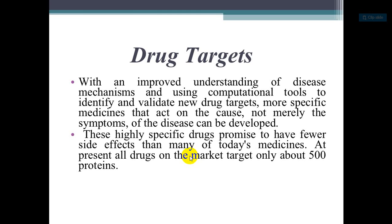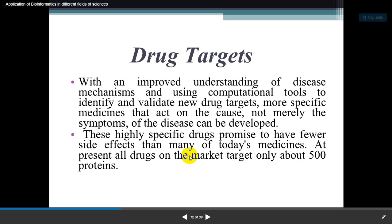At present, all drugs on the market target only about 500 proteins. In the human body we have thousands of different proteins, and those proteins are also responsible for many actions and functions. So we could try to target those additional proteins as well. However, what is happening globally is that everyone targets one specific protein because it is already well-studied.